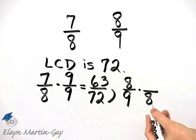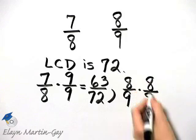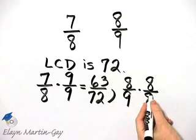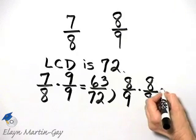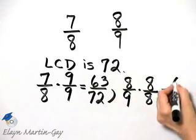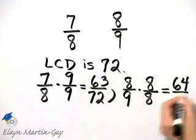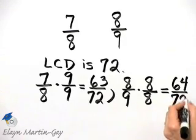Whatever number I use here, I use that same number in the numerator because then I'm multiplying by 1. What do I have? 8 times 8 is 64. 9 times 8 is 72.